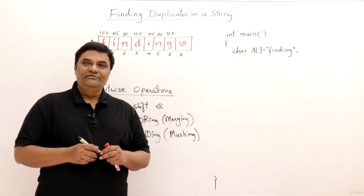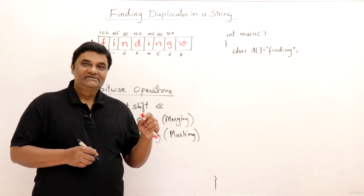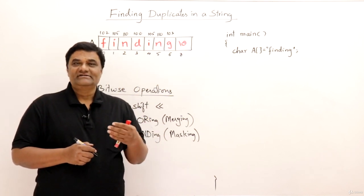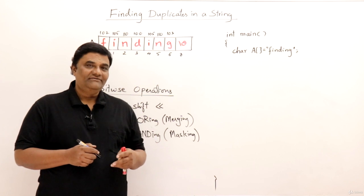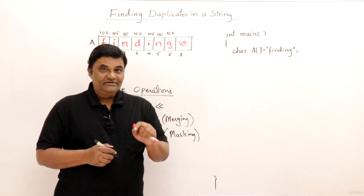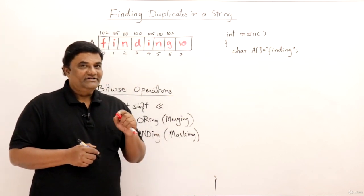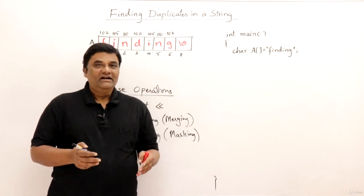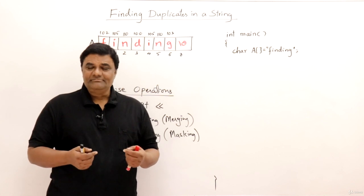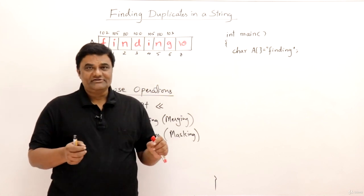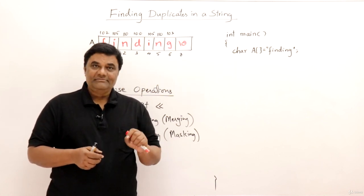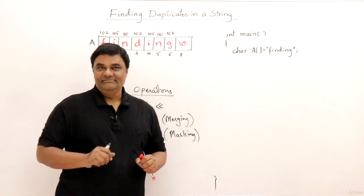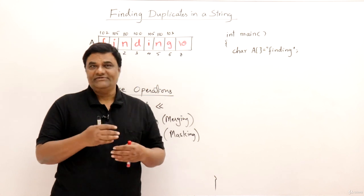In this video we will see how to find duplicates in a string - if any alphabets are repeating. We have already seen the same thing in previous videos where we learned two methods. Now the third method is using bits. We will learn how to perform the same thing using bits. This method is not just for a string but is useful for integer numbers also, though it is more favorable for a string.